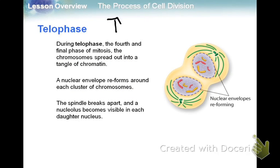Telophase — key word: 'two,' as in two nuclei. The chromosomes spread out and decondense. The nuclear envelope reforms, the spindle breaks apart, and the nucleolus comes back. It's basically the opposite processes of what happened in prophase.